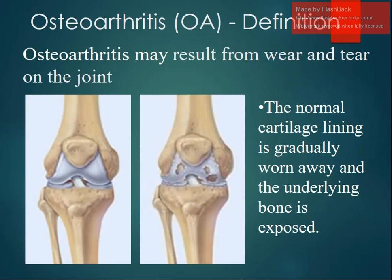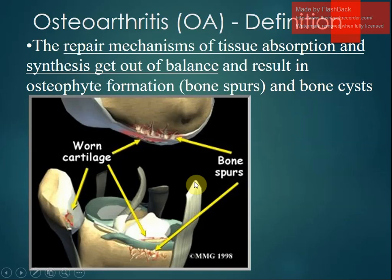The mechanical loading of wear and tear gradually wears away the normal cartilage lining, exposing the underlying bone — a process called eburnation, visible as patches where cartilage is torn or worn out. The repair mechanisms of tissue absorption and synthesis become imbalanced, resulting in new bone formation in the form of bone spurs and bone cysts.